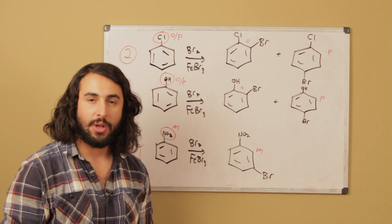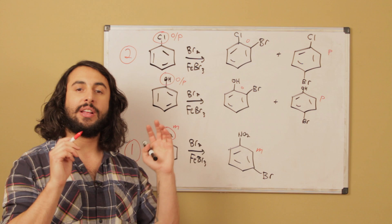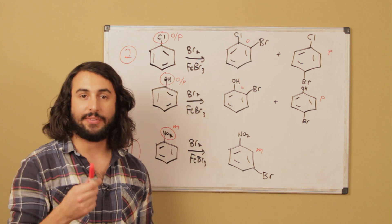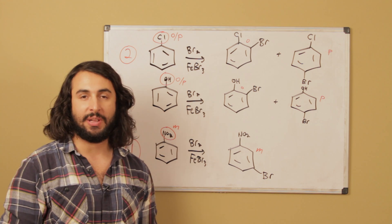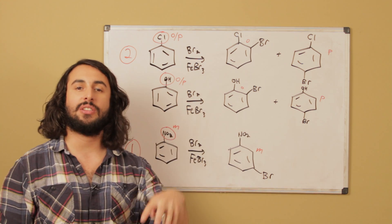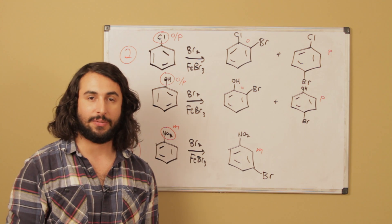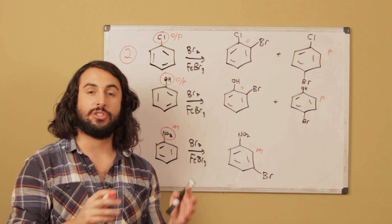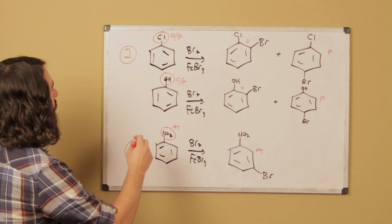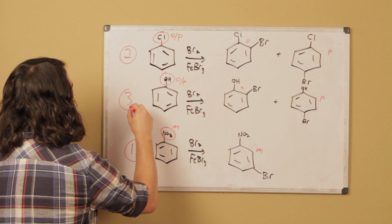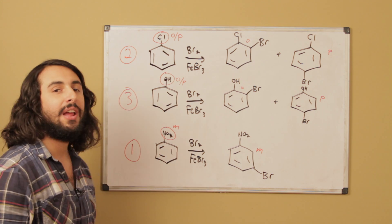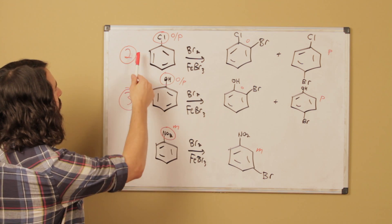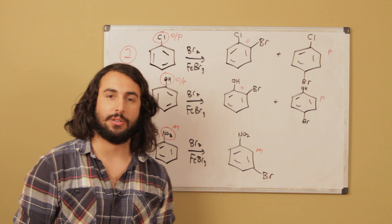However, when we have an electron donating group like a hydroxyl group or an amino group that puts lone pairs into the ring by resonance, that stabilizes the positively charged arenium ion intermediate. They put excess electron density into the ring to stabilize that positive charge, so electron donating groups actually speed up the reaction compared to plain benzene. So this one goes faster than benzene by itself, while these two go a little bit slower than benzene by itself. The correct order is one, two, three — and these are the correct product mixtures.